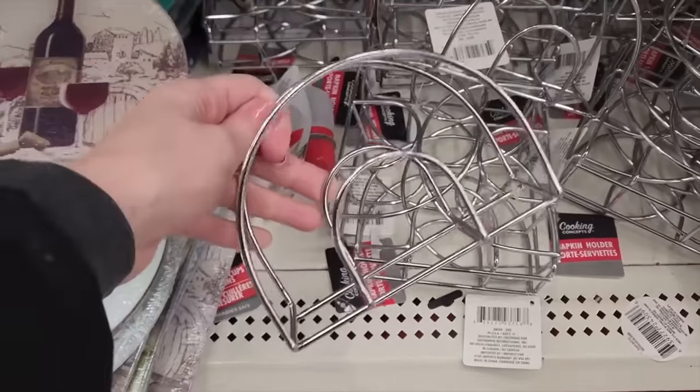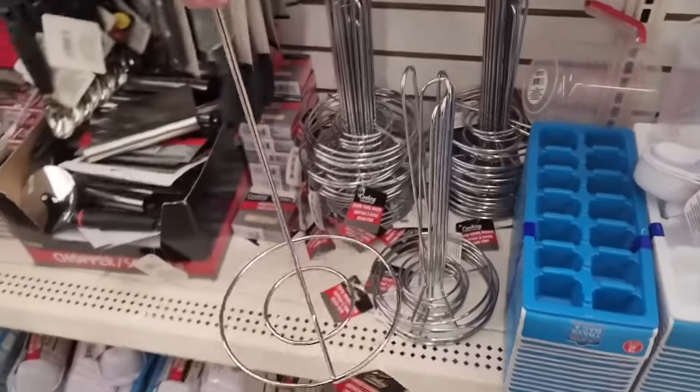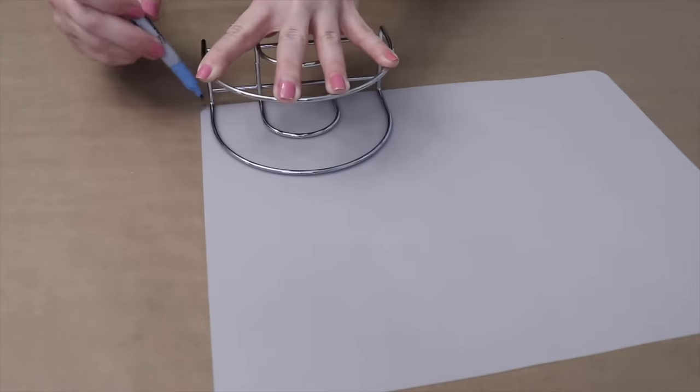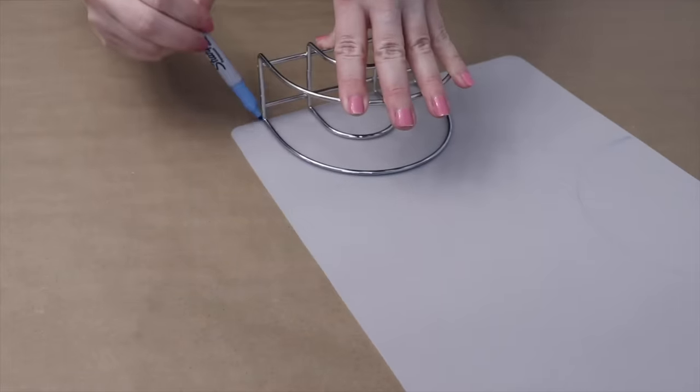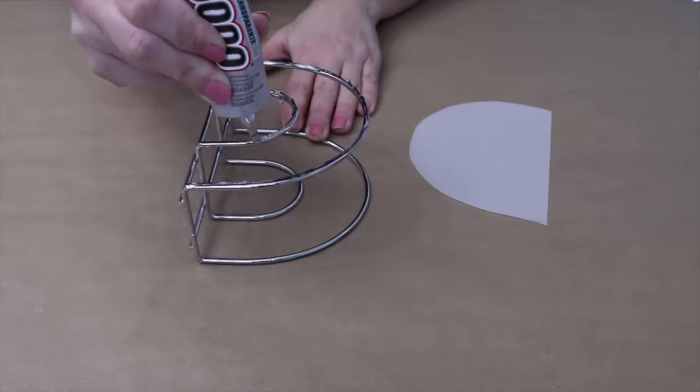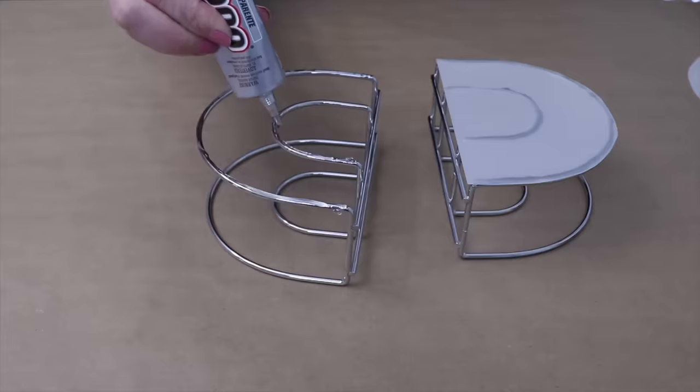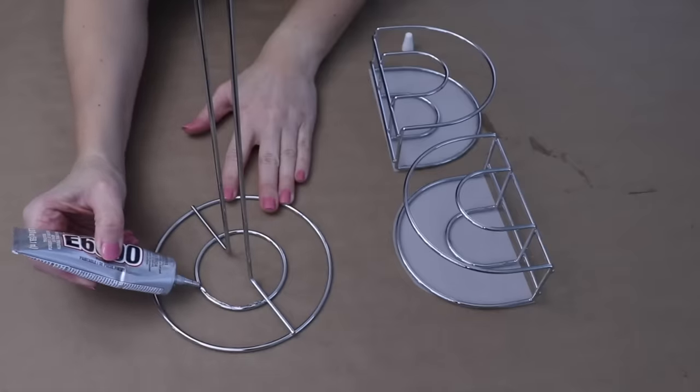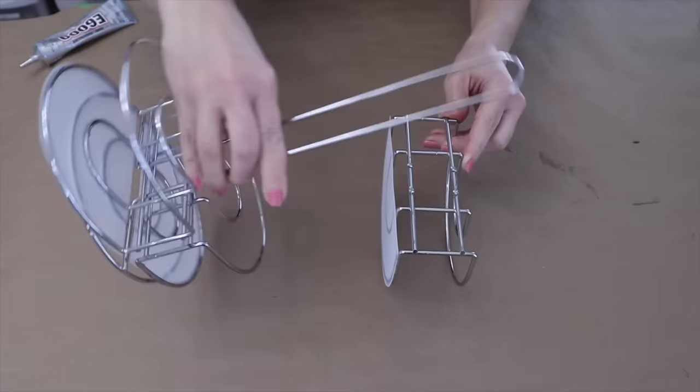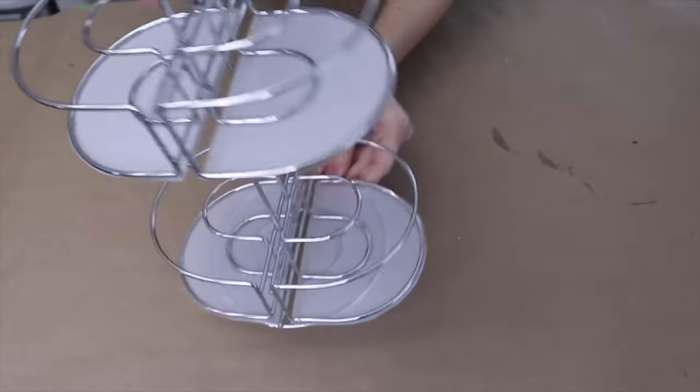You'll need four of these chrome napkin holders, a paper towel holder, and a set of these plastic chopping boards. First thing is to trace the napkin holder onto the chopping board four times and then cut out the half circles. Attach those pieces of the plastic chopping board to the side of the napkin holder. Take these napkin holders and glue them to the bottom of the paper towel holder. Attach two more toward the top of the paper towel holder.